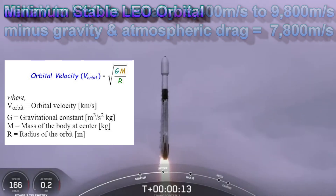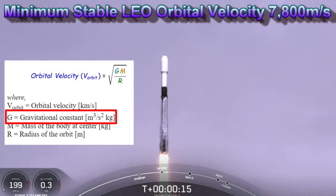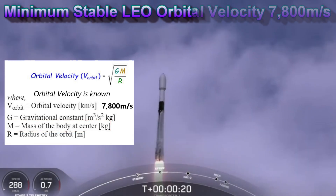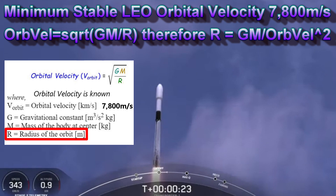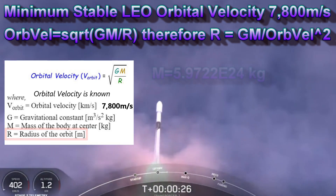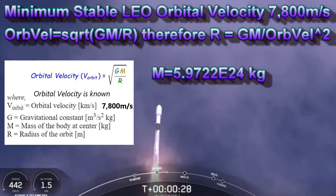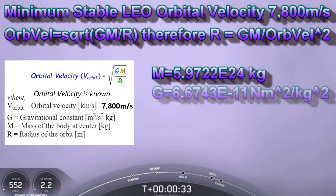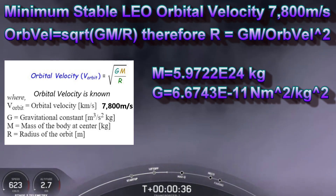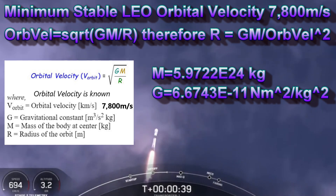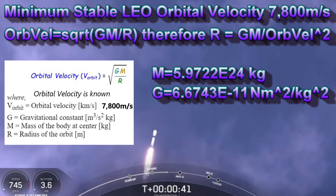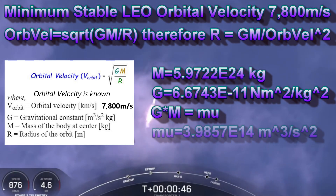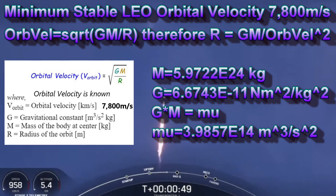Here is the equation that gives us the orbital velocity. From knowing the gravitational constant and the mass of the Earth, we can rearrange this equation to calculate the radius of the orbit. The mass of the Earth is 5.9722 times 10 to the 24th kilograms. The gravitational constant is 6.6743 times 10 to the minus 11 newton meters squared per kilogram squared. Multiplying these gives us a pseudo-constant we call Mu, which is 3.9857 times 10 to the 14th power meters cubed over seconds squared.